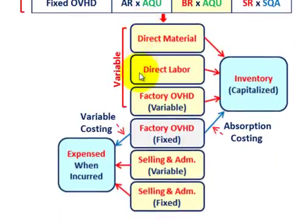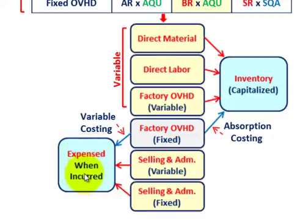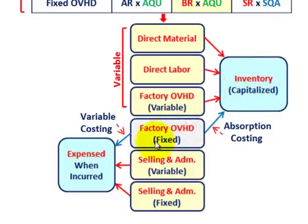To summarize: under variable costing, direct materials, direct labor, and variable factory overhead are capitalized in inventory, while fixed factory overhead and all selling and administrative expenses are expensed when incurred. Under absorption costing, the only difference is that the fixed factory overhead is also capitalized in inventory rather than expensed. Selling and administrative expenses — both variable and fixed — are expensed when incurred under both methods.